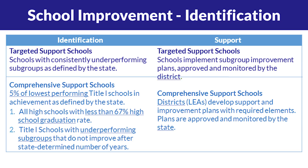We have two sets of schools required to be identified under federal law: targeted support schools and comprehensive support schools. Targeted support schools are those with consistently underperforming subgroups. Those schools, if they have that designation, have six years to improve and close that gap, and are required to locally develop an improvement plan that is approved and monitored by the local school district.